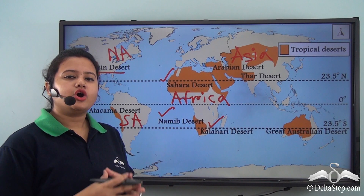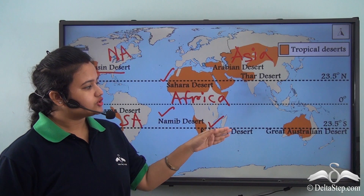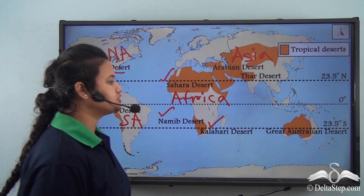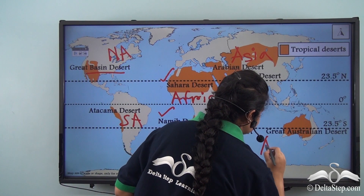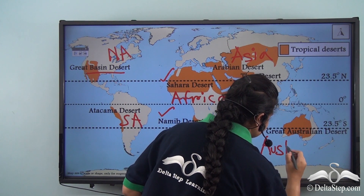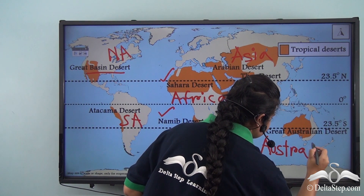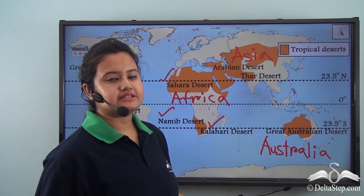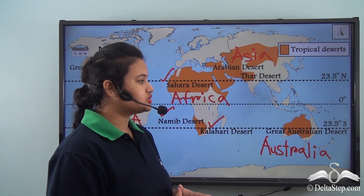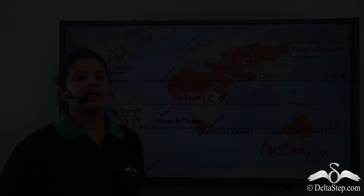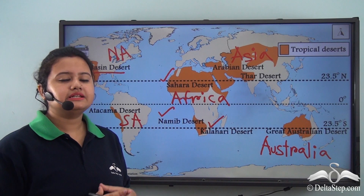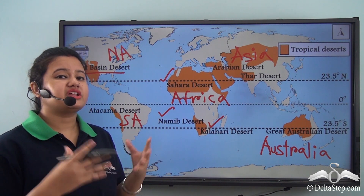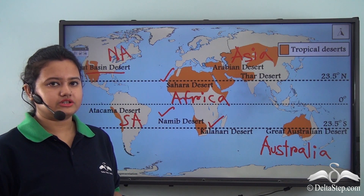The Great Australian Desert covers the maximum part of Australia and is also a tropical hot desert. So from this map, we can understand that tropical deserts are present in almost every continent of the world.